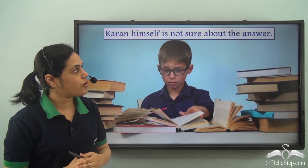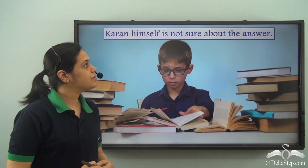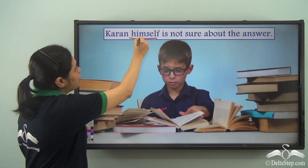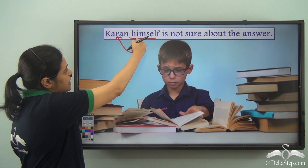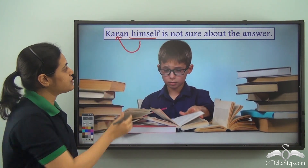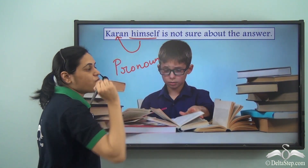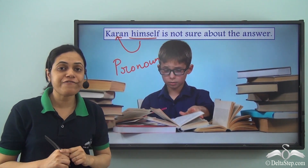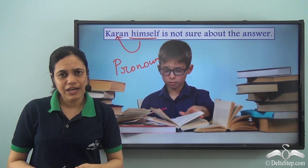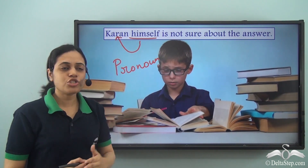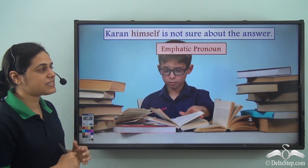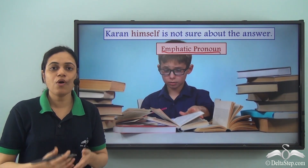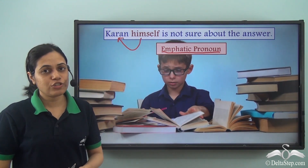Next sentence: 'Karan himself is not sure about the answer.' What is the pronoun here? 'Himself' is referring to the noun Karan, so 'himself' is a pronoun. It refers back to Karan and is also emphasizing. We can have the sentence without 'himself' — 'Karan is not sure about the answer' — so 'himself' is used for emphasis. Therefore it is an emphatic pronoun, which refers back and also emphasizes.